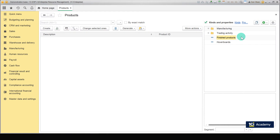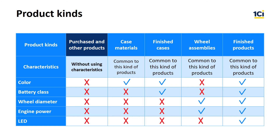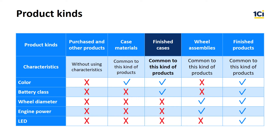Using the same procedure, create the following product kinds yourself: Purchase and Other Products, without using characteristics; Case Materials, with characteristics common to these kind of products; Finished Cases, with characteristics common to these kind of products; and Wheel Assemblies, with characteristics common to these kind of products.